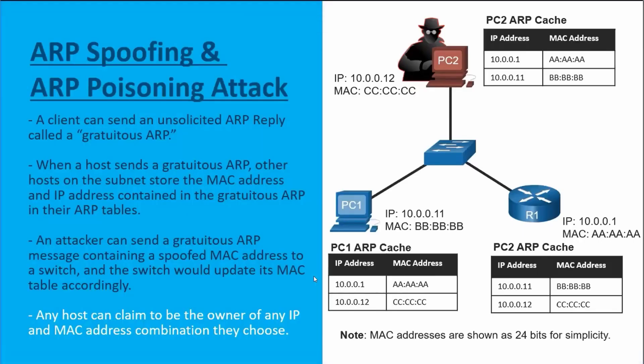Address Resolution Protocol is a powerful protocol on our networks that allows our networks to function. With ARP, we're talking about having a known IP address being mapped to an unknown MAC address, and this is being used all the time with devices on the network. A client can send an unsolicited ARP reply, which is known as a gratuitous ARP — it's really a broadcast that a specific IP address is mapped to a specific MAC address.